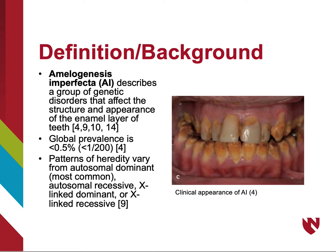The photo shows what a more severe form of AI may look like clinically. The prevalence of AI is rather low, at about 0.5%. AI is a more complicated genetic disorder that can be inherited in several different patterns, with autosomal dominant being the most common pattern of heredity. Other possible patterns of heredity include autosomal recessive, X-linked dominant, or X-linked recessive.